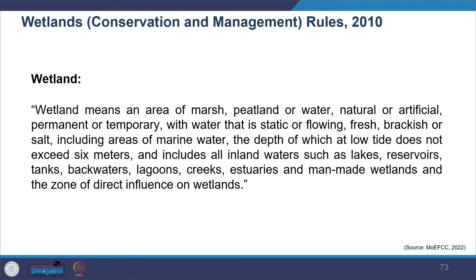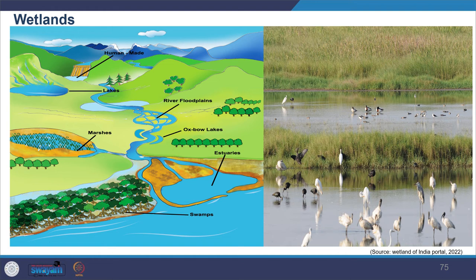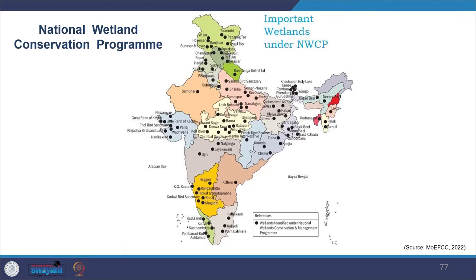Forest rights under this act include community rights of use or entitlements to natural products such as fish, which is relevant to EIA preparation. The rules make provision for inclusion of traditional fishing grounds as evidence for determining forest rights — important for fishing communities in areas like the Sundarbans Tiger Reserve in West Bengal. Additionally, the Wetlands Conservation and Management Rules 2010 define wetlands as areas of marsh, peatland and water where the water level remains near or above the ground surface for most of the year. The Government of India implements the National Wetland Conservation Program in collaboration with state governments and union territories, with over 100 wetlands identified requiring urgent conservation.